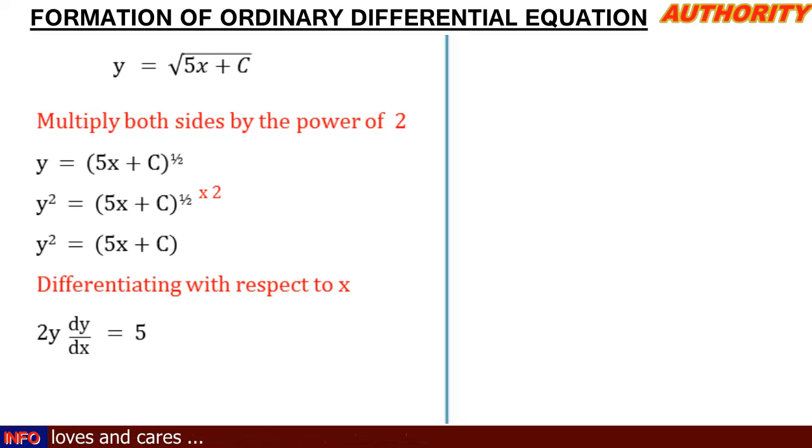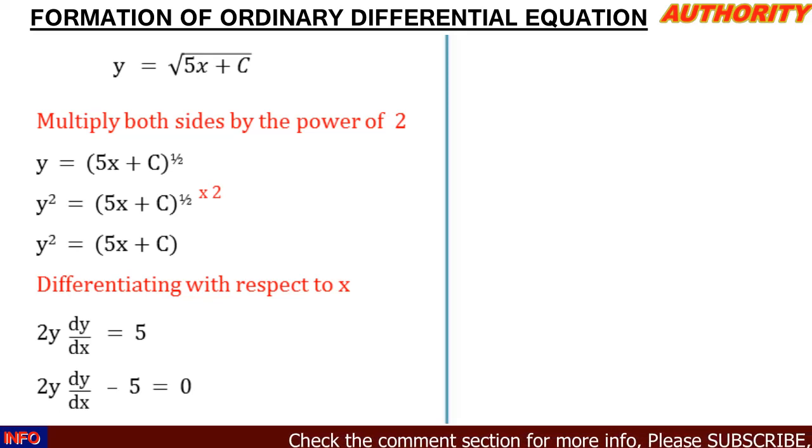So here we have 2y dy/dx equals 5. Let's take 5 to the other side. That means we have 2y dy/dx minus 5 equals 0. So this is the differential equation corresponding to the function y equals square root of 5x plus C.